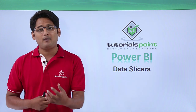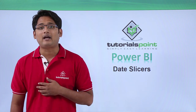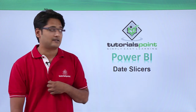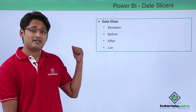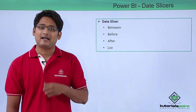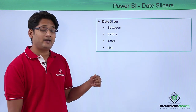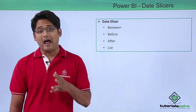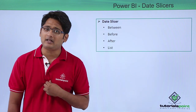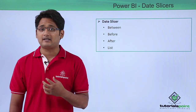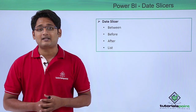In Power BI Desktop, date slicers have four types: Between, Before, After, and List. We'll have a better understanding of these four different kinds of slicers in our practical approach.